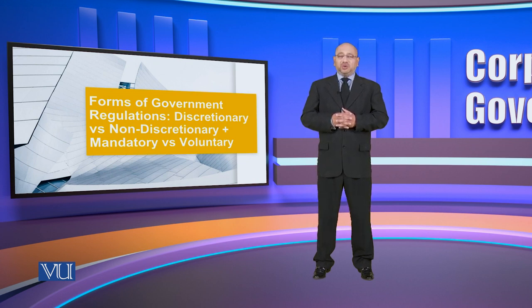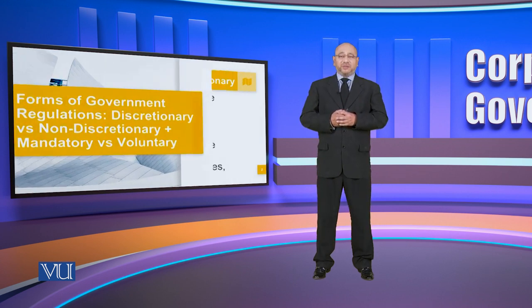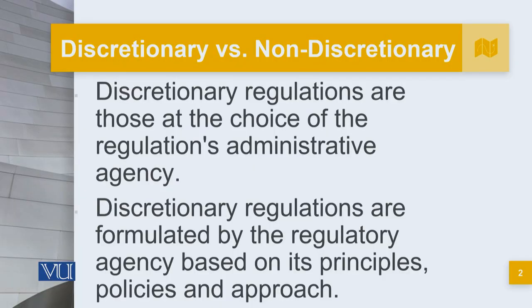When we're talking about government regulations, they can either be discretionary or non-discretionary, and they can be mandatory or voluntary. Discretionary regulations are those at the choice of the regulatory administrative agency. They are formulated by the regulatory agency based upon its principles, policies, and approach.